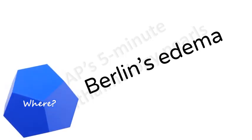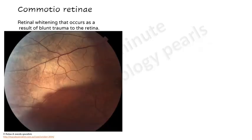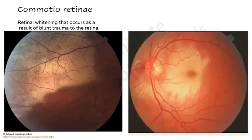Where do you exactly get Berlin's edema? Commotio retinae refers to the retinal whitening that occurs as a result of blunt trauma to the retina. Commotio retinae that is present in the posterior pole is referred to as Berlin's edema.